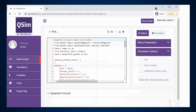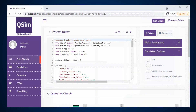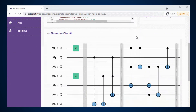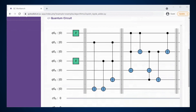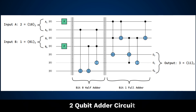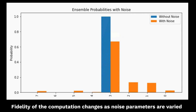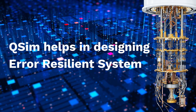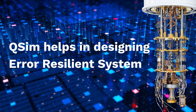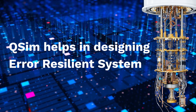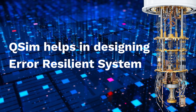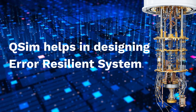QSim comes loaded with quantum programs and algorithms such as Grover's, Deutsch, QFT, and more to provide a head start to users. Consider an example of a binary addition algorithm — QSim helps to understand how the fidelity of the computation changes as noise parameters are varied. A real quantum computer may suffer errors from many sources, and QSim allows fine-tuning of errors to help design error-resilient systems.